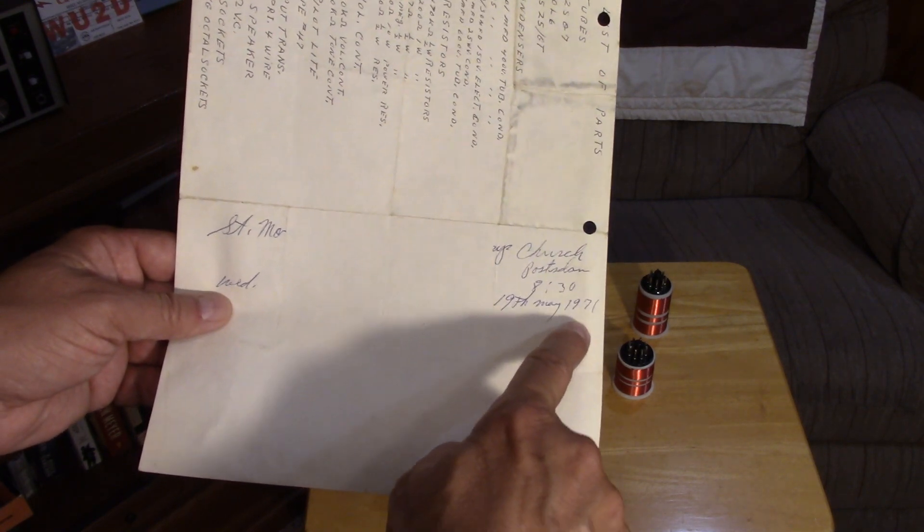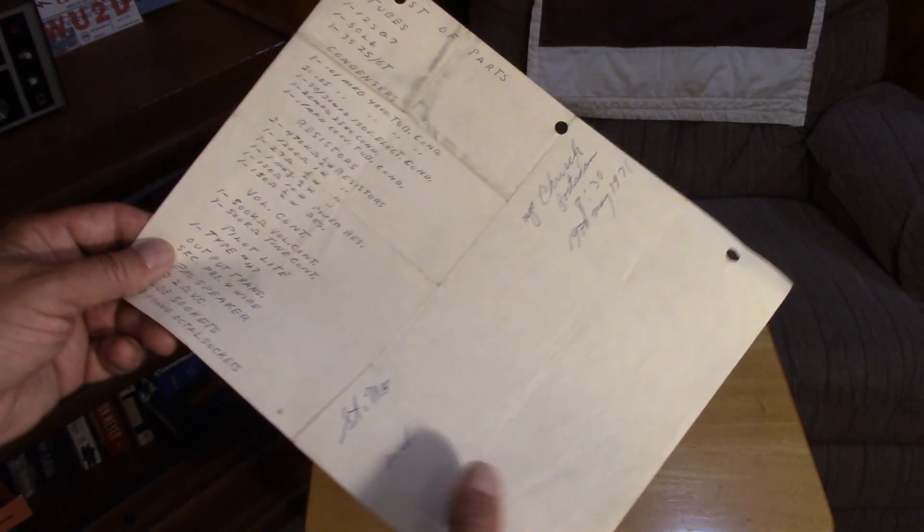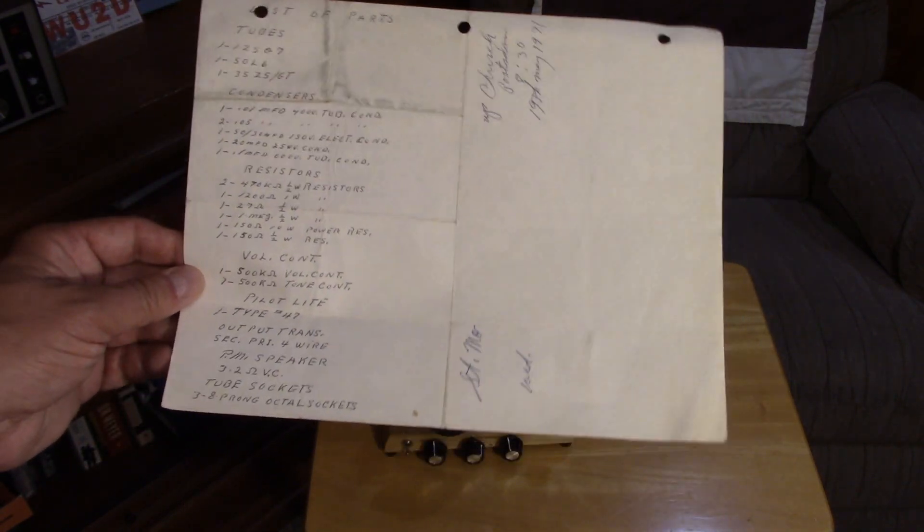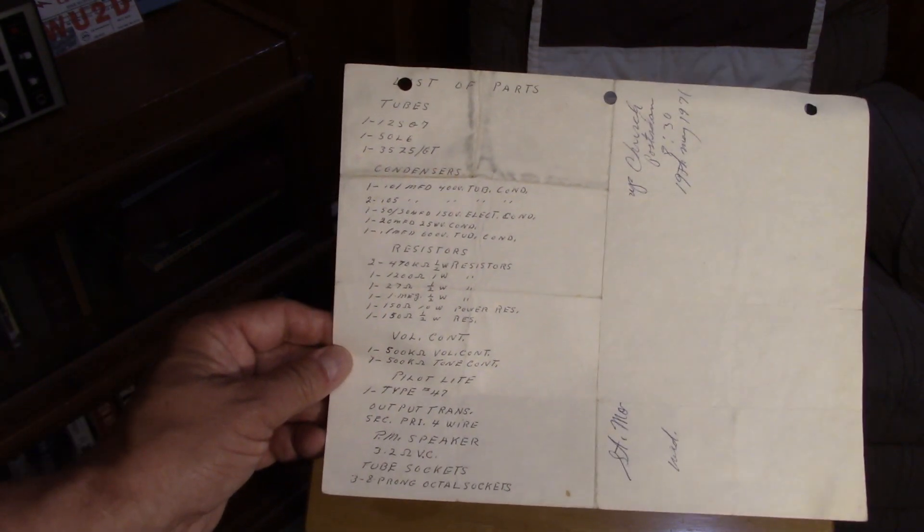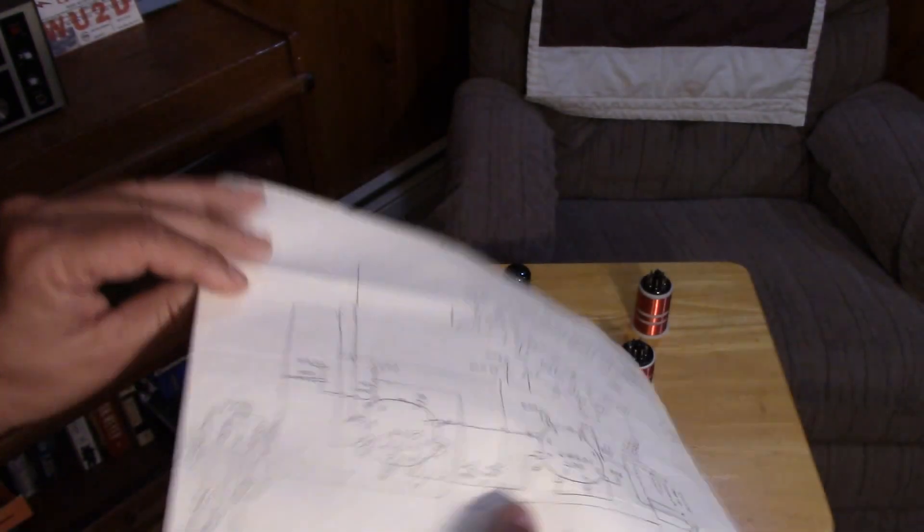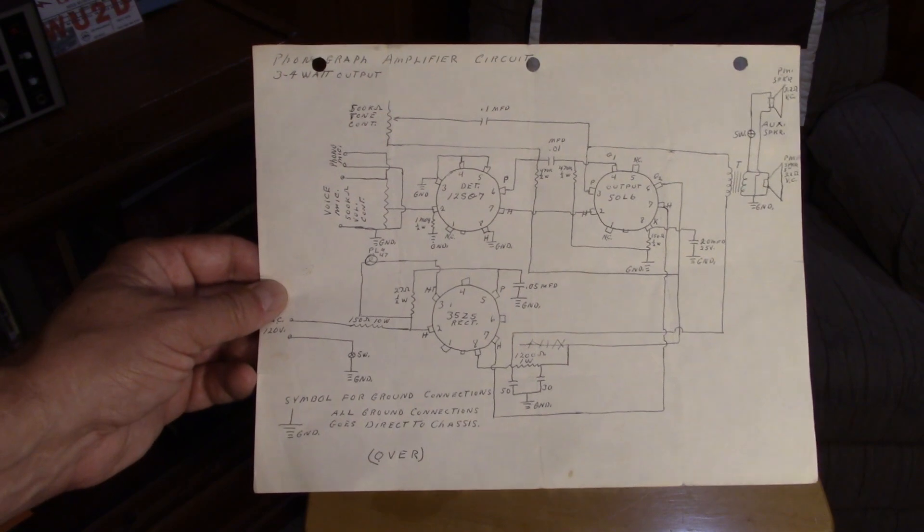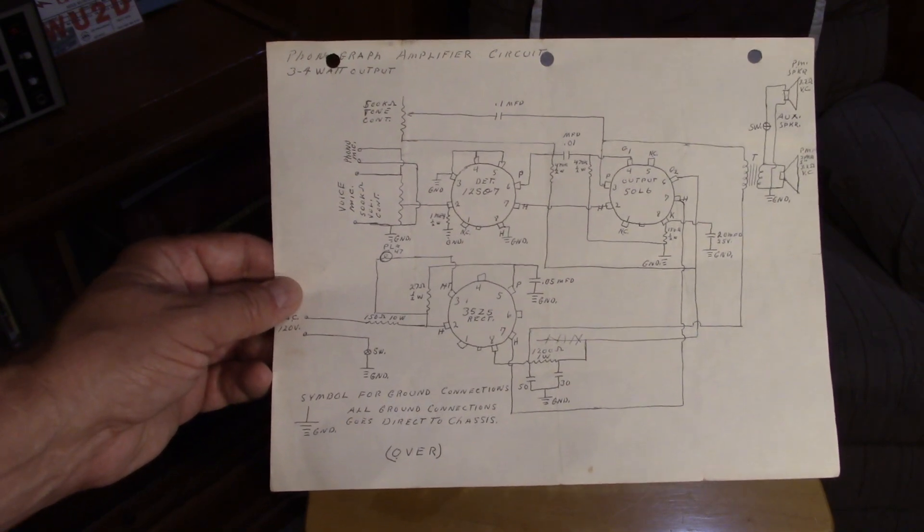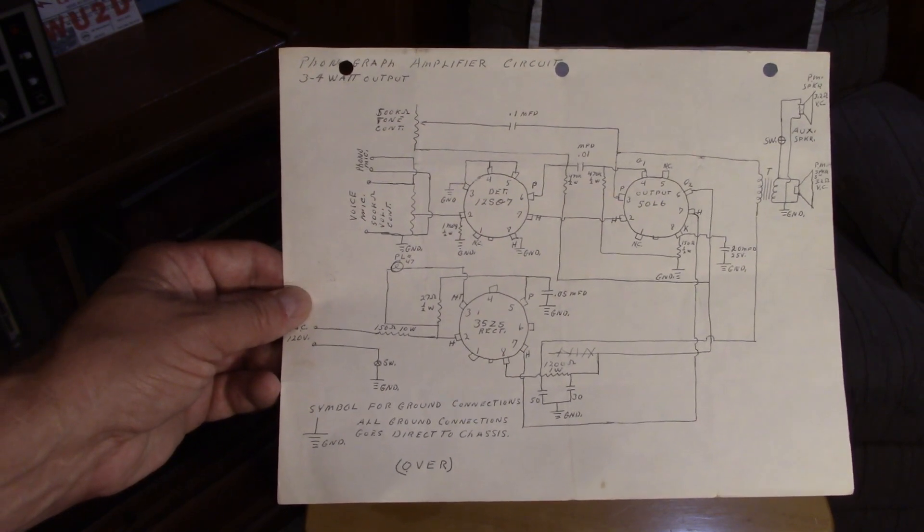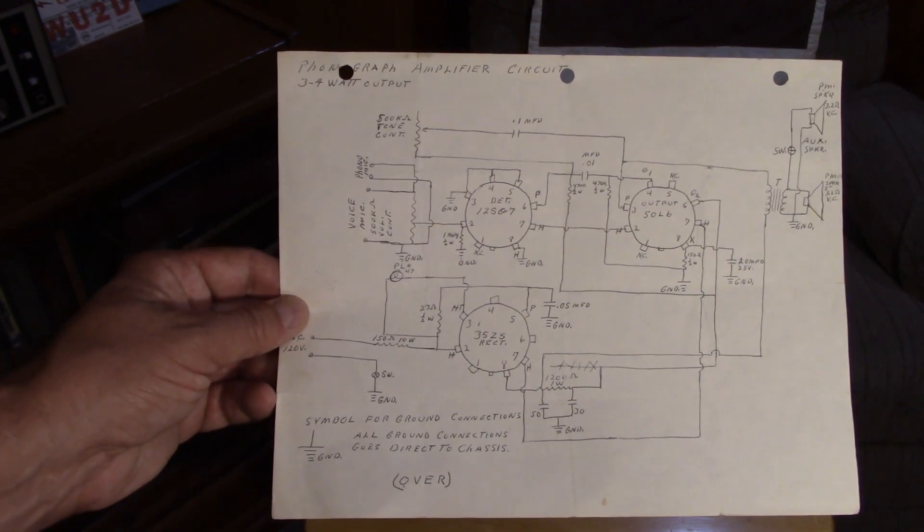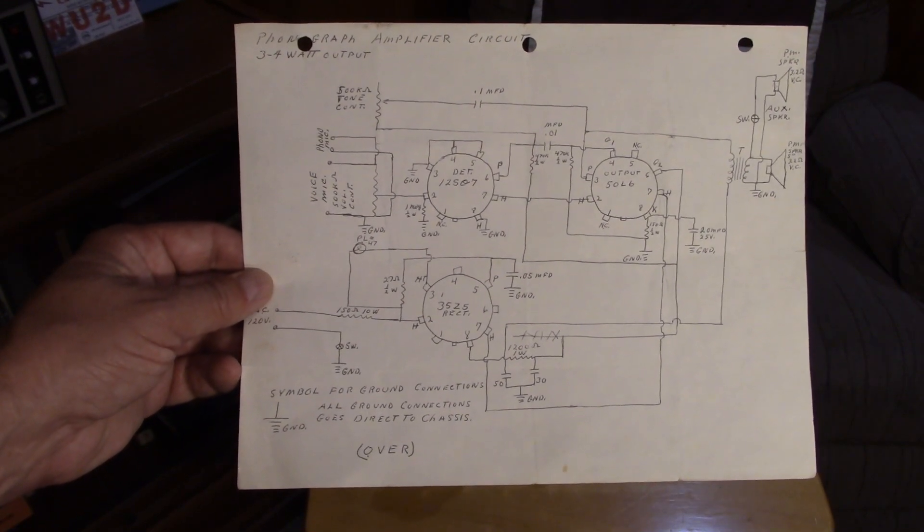And I have the actual date because it's written on a church thing here from 1971. So the 19th of May, 1971 was where this piece of paper came from. So I would have been 14 years old when I received this parts list and this beautifully hand-drawn schematic that's drawn in a way that you can actually hook up the wires to the tube pins as you're looking down. Very, very clever, very well-drawn hand diagram.